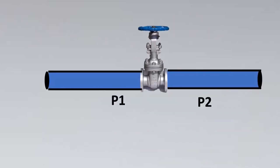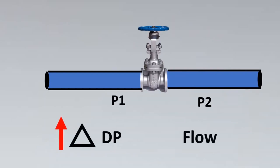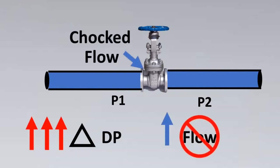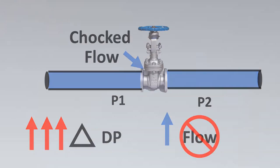Imagine this is your valve and this is your pressure drop happening. We know that if we increase DP there is going to be an increase in flow, but if we keep increasing DP, at a certain point flow will not increase anymore. This point is called choked flow.